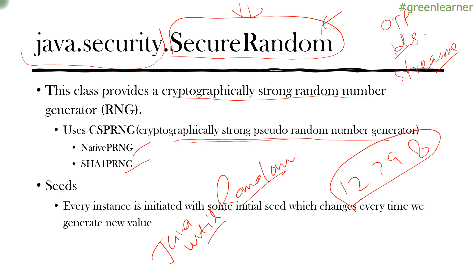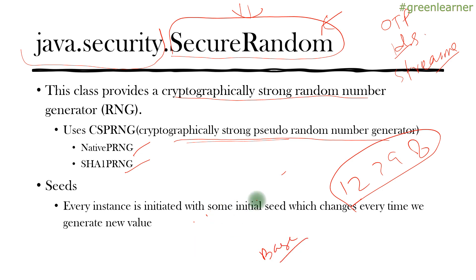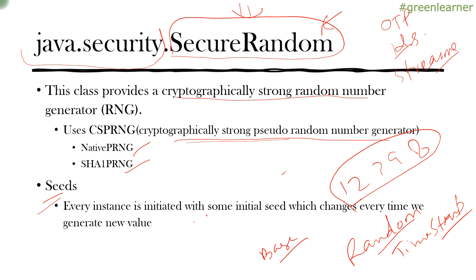Now let's talk about the seed value. When any algorithm is implemented to generate a random number, it needs some base value — that base value is provided by the seed. With java.util.Random, the timestamp at which the random number is generated is taken into consideration. If an attacker can guess that timestamp, they can guess the next random number. With SecureRandom, it is very difficult to guess because it uses complex CPU cycle and clock concepts, puts them into complex calculations, and then provides the base value. This makes it very difficult to guess the base number. Every instance is initiated with some initial seed which changes every time a new value is generated.